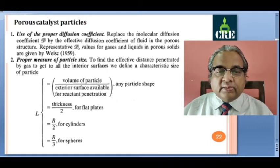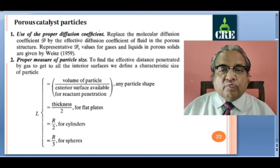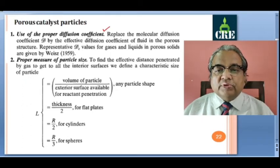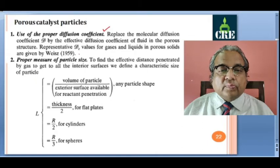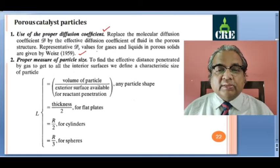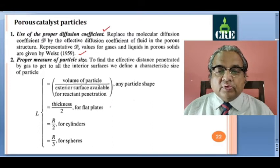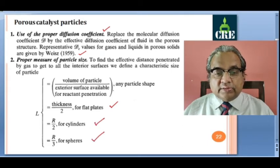For porous catalyst particles, we use a proper diffusion coefficient: replace the molecular diffusion coefficient D by the effective diffusivity D_E of the fluid in the porous structure. D_E values for gases and liquids in porous solids are given by Weiss in his 1959 publication. For proper measure of particle size, the characteristic size is the volume of the particle divided by the exterior surface available for reactant penetration. For a flat plate it is thickness divided by 2, for cylindrical particles radius divided by 2, and for spherical particles R divided by 3.